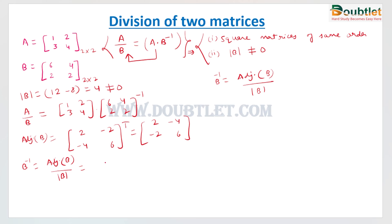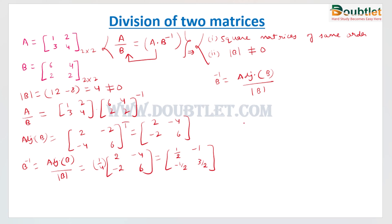The determinant is 4, so we compute (1/4) × [2, -4; -2, 6], multiplying the scalar with each element. The inverse matrix of B is therefore: [1/2, -1; -1/2, 3/2].